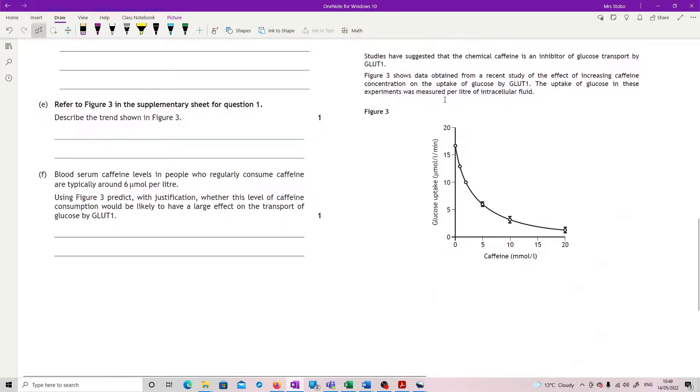Studies have suggested that the chemical caffeine is an inhibitor of glucose transport by GLUT1.